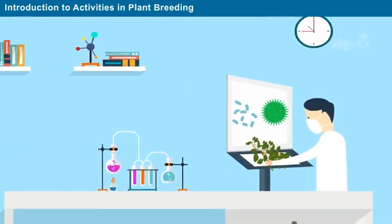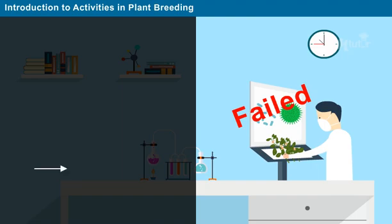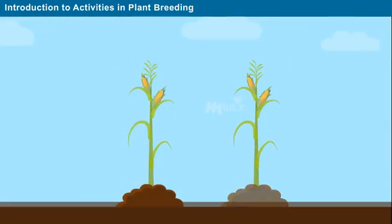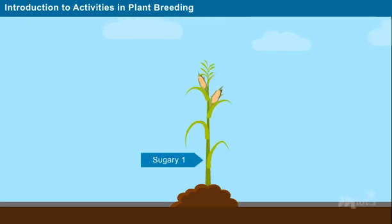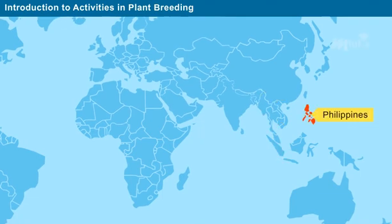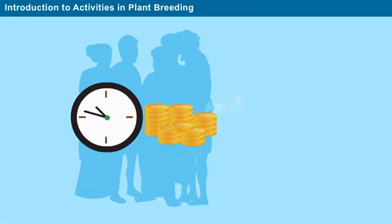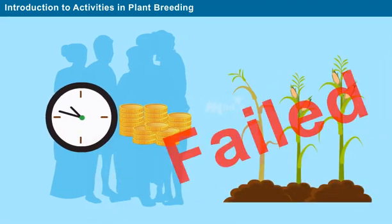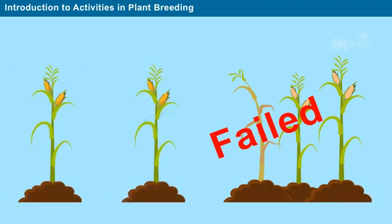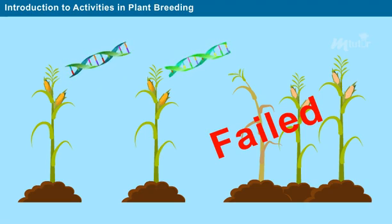Nevertheless, the initial attempts in plant breeding failed and led to huge losses in the agricultural domain. One such example is Sugary 1, the hybrid sweet corn variety that was cultivated in Philippines and Taiwan. Despite expenditure of several resources, the expected result was not achieved. It was later identified that the major cause for this loss is the creation of more genetic variation of the selected variety.